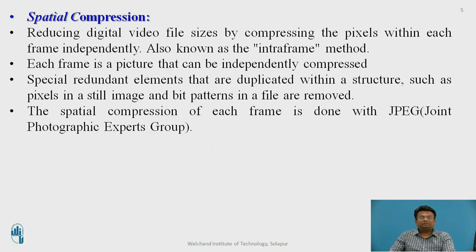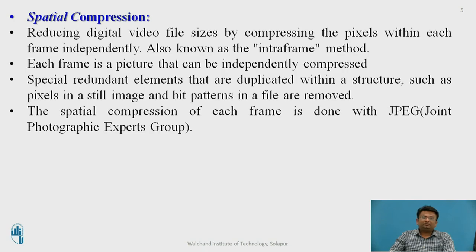Spatial compression is reducing the video file size by compressing the pixels present in each frame independently. This type of compression is also called the intra-frame method. Each frame is a picture that can be independently compressed. Spatial redundant elements — duplicated elements within a structure such as pixels in a still image and bit patterns in files — are removed. Spatial compression of each frame is done using JPEG compression, which stands for Joint Photographic Expert Group.